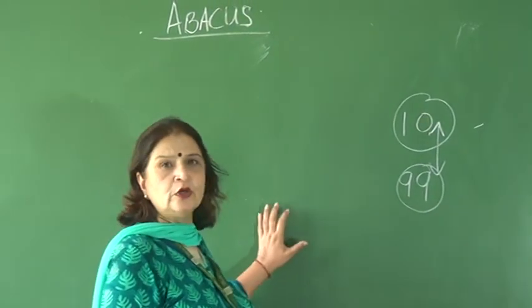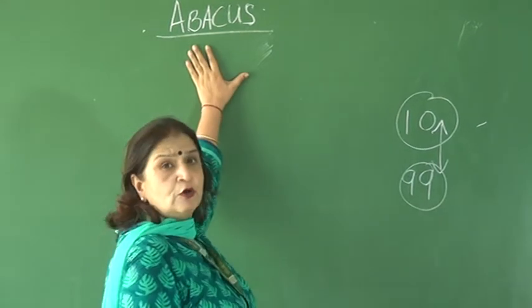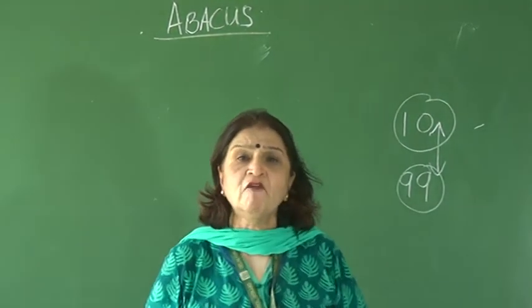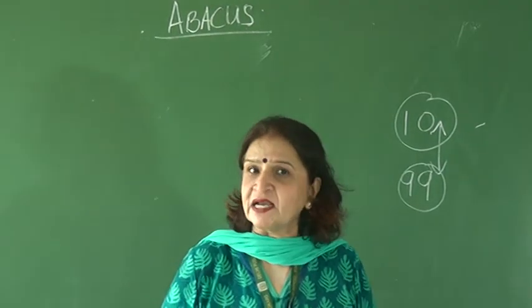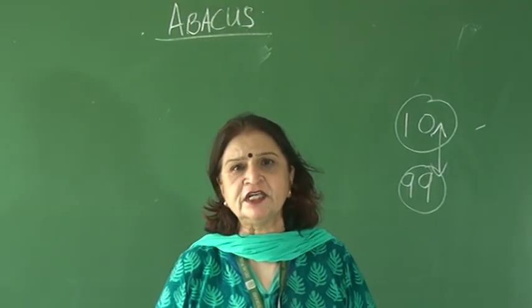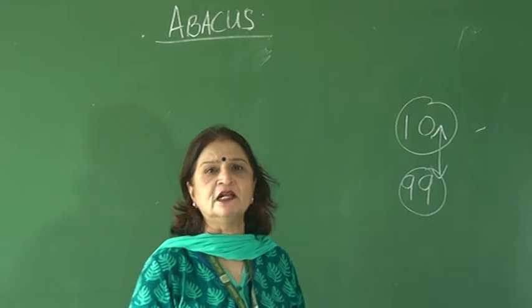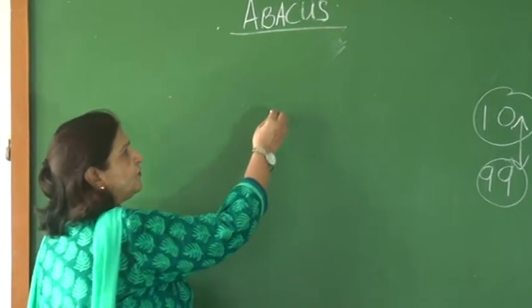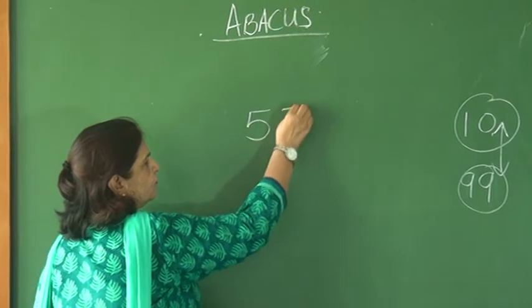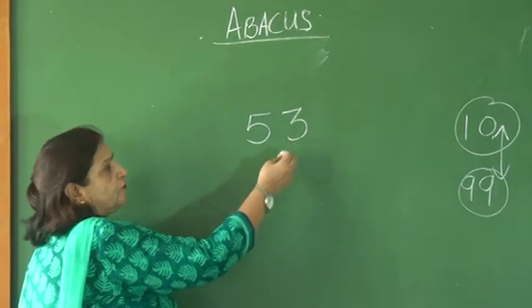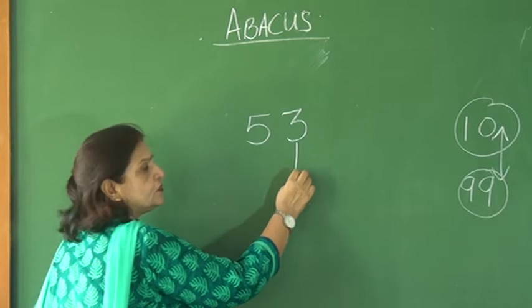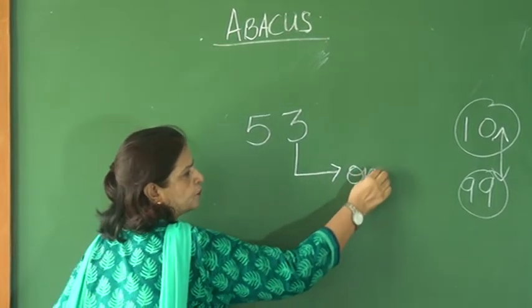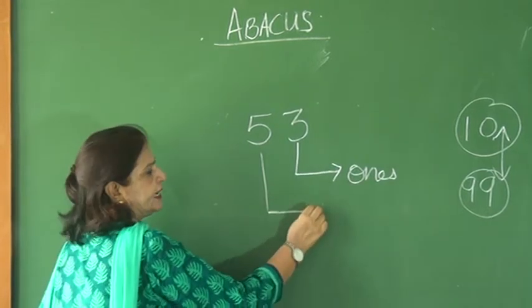Now I will explain you how to show the numbers on an abacus. First of all, tell me what is an abacus. An abacus is a tool with which we can show the numbers and count the numbers according to their place value. If I take 53 — 3 is at ones place and 5 is at tens place.